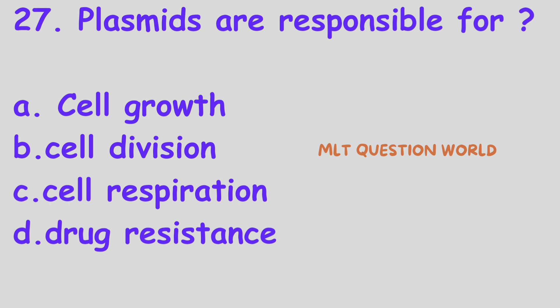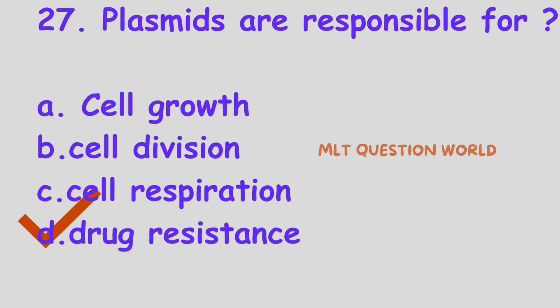Question number 27. Plasmids are responsible for: Option A, Cell growth; Option B, Cell division; Option C, Cell respiration; Option D, Drug resistance. Plasmids are responsible for which of the following functions? The right answer is Option D, Drug resistance. Plasmids are responsible for drug resistance.